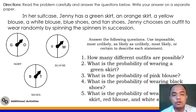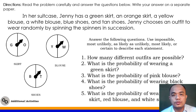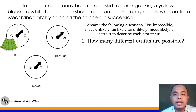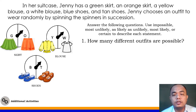We have spinners for each clothing item. For skirts, we have green (G) and orange (O). For blouses, we have yellow (Y) and white (W). For shoes, we have blue and tan. So Jenny has a green and orange skirt, a yellow and white blouse, and blue and tan colored shoes.